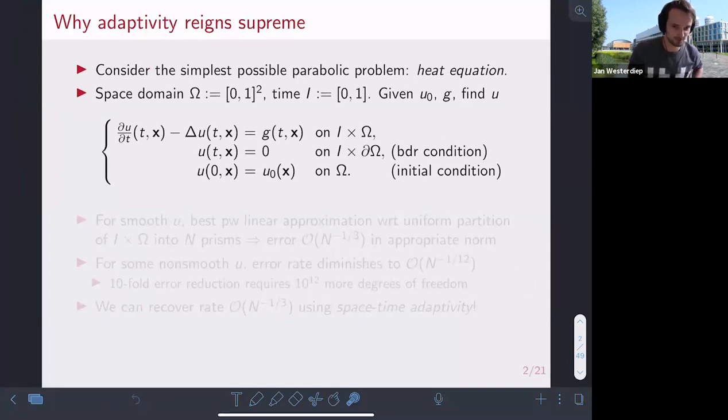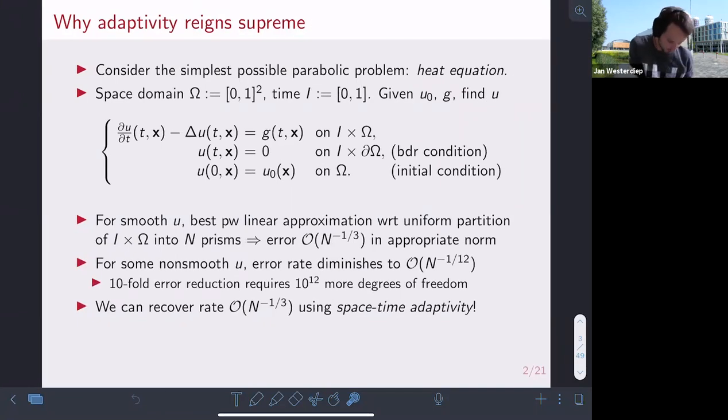So why adaptivity reigns supreme? We consider the simplest possible parabolic problem being the heat equation, just the initial boundary value problem. We have some spatial domain, in this instance the unit square, and some time domain. Then given initial data and forcing data, we want to find the U that solves the heat equation. Now, if the U is smooth, if our solution is smooth, then the best piecewise linear approximation with respect to a uniform partition of the space-time cylinder into prisms yields an error that is proportional to N^{-1/3}, which is basically N^{-1/(d+1)} in some Bochner space norm.